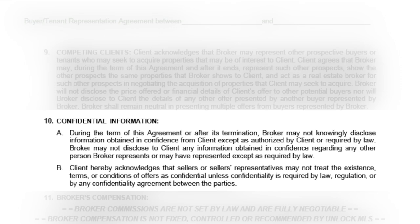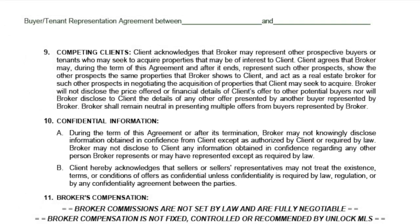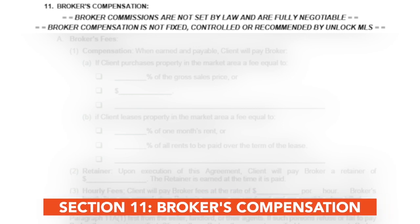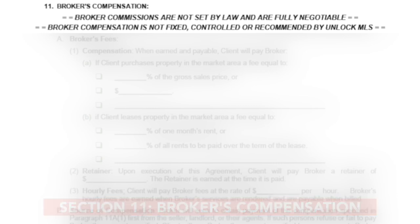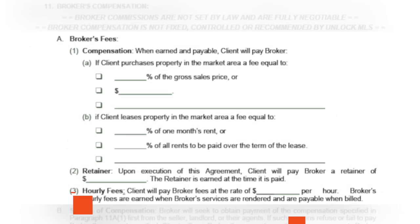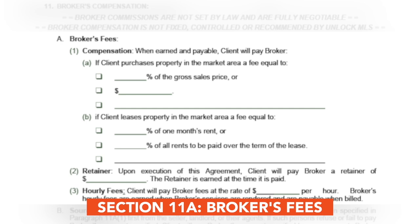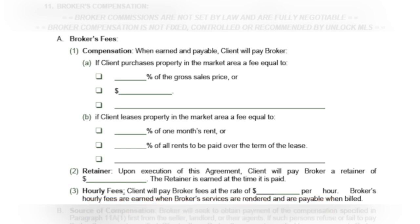It also talks about how offers are covered and not covered by confidentiality. The eleventh section is Broker's Compensation. The section starts with the important reminder that broker commissions are not set by law and are fully negotiable. This is required to be disclosed to the parties in any written agreements under the Unlock MLS rules. The first part of this section breaks down how compensation will work for a purchase or a lease. The broker will be paid compensation agreed upon by the buyer, which must be clearly defined in this agreement.